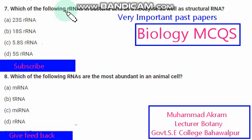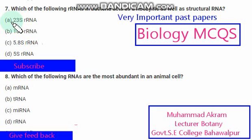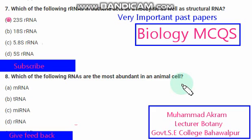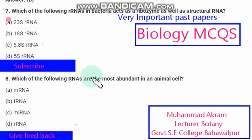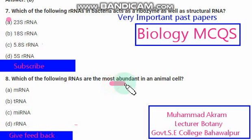Which of the following ribosomal RNAs in bacteria act as ribozyme as well as structural RNA? The right option is option A. Which of the following RNAs are the most abundant in animal cells? The most abundant RNA in animal cells is ribosomal RNA.